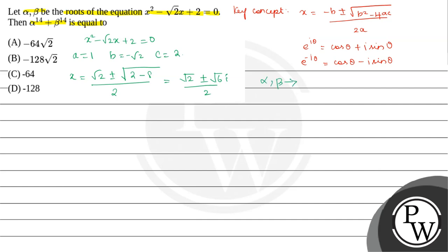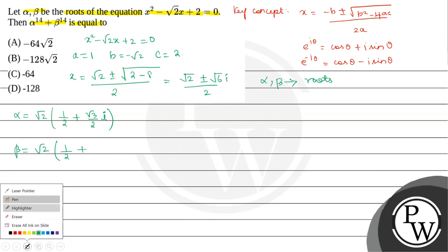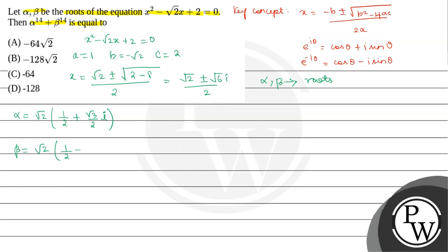It is given that alpha and beta are the roots. So let us take alpha equals to root 2 into 1 by 2 plus root 3 by 2 into i, and beta equals to root 2 into 1 by 2 minus root 3 by 2 i. We can write this as root 2 into — 1 by 2 is cos pi by 3 and root 3 by 2 is sin pi by 3 — which equals to root 2 e power i pi by 3. Similarly, beta equals to root 2 e power minus i pi by 3.